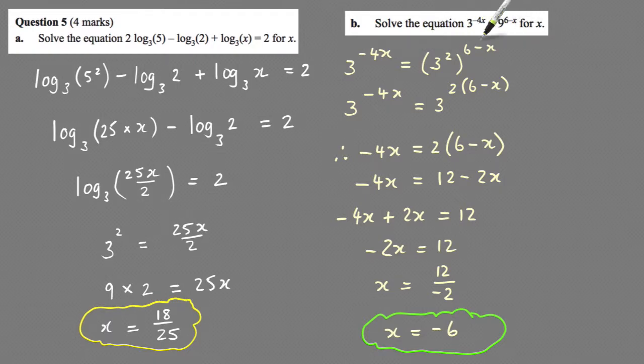This stays the same, and then that 9 becomes 3 squared to the same power. Then in the next step, what you do with these two powers when you have something raised to a power then to another power, you multiply the powers.